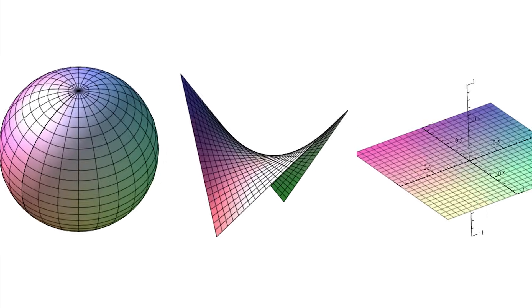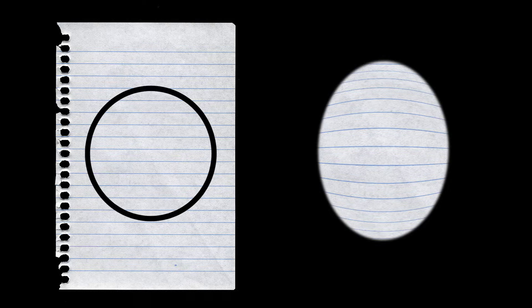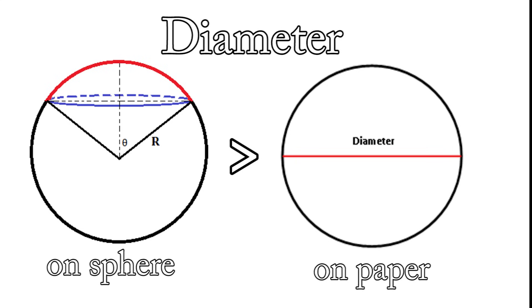It would mean that space-time has a curvature. Take the piece of paper with the circle drawn on it and fold it into a semisphere. Now the circle's diameter would be bigger and therefore we would get a different value of pi.